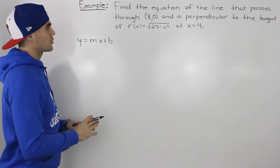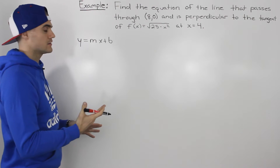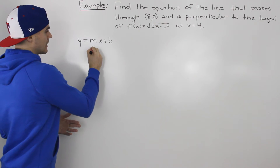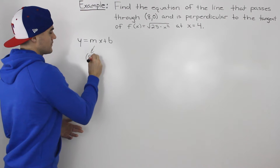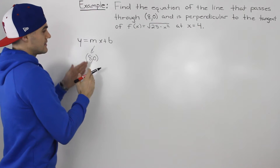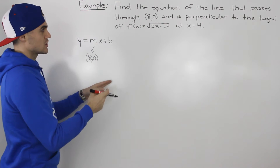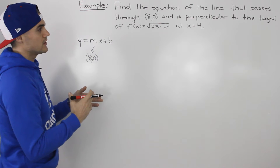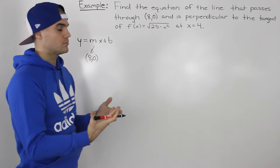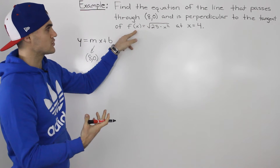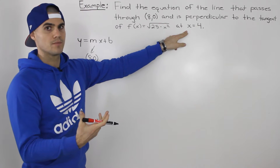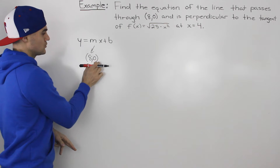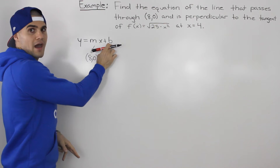So let's read the question again one more time carefully. Find the equation of the line — we know our final answer is going to be in this form — and we know that this line is passing through the point (8, 0). This line is also perpendicular to the tangent on this function at an x value of 4. So if we can find the slope of the tangent for this function at an x value of 4, and then find the perpendicular slope, that would be the slope of this line. And then once we have the m value and a point, we can solve for the b value.